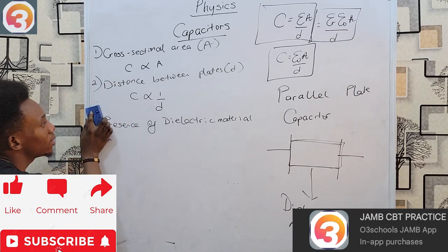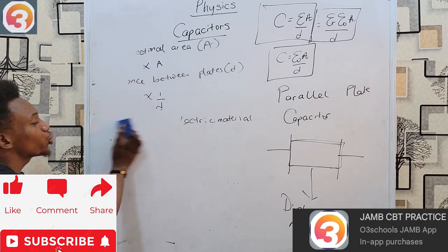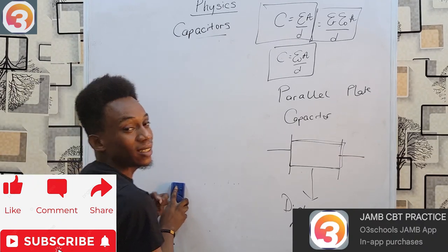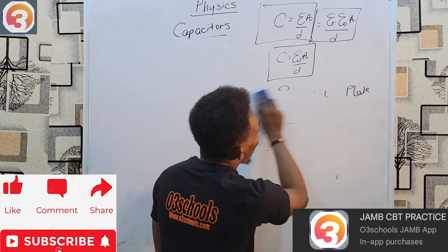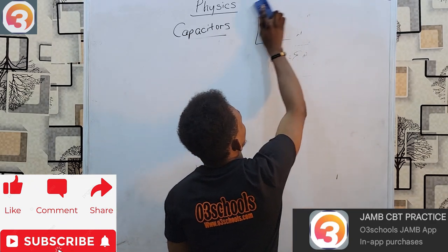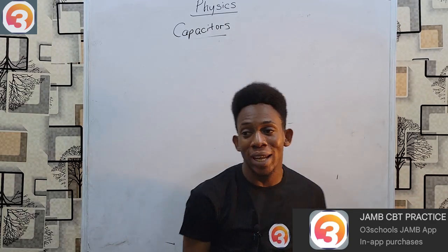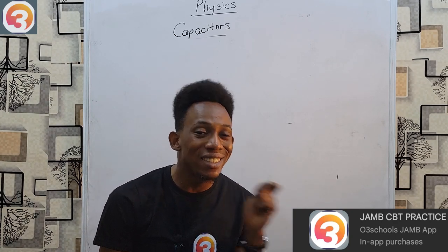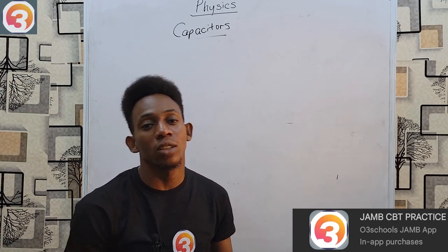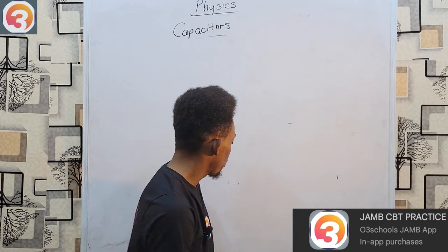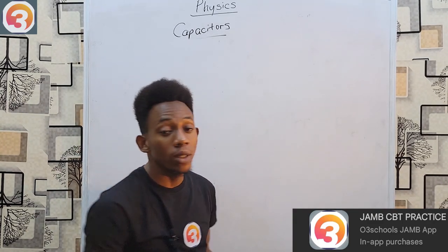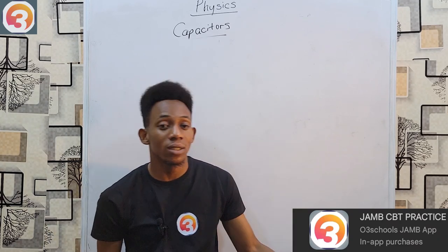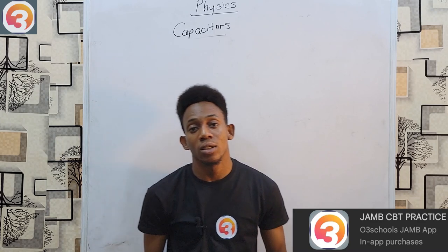Moving on, something intriguing about capacitors is that you can combine several capacitors to give one effective capacitance — many capacitors combined in a circuit to give just one total, net, or resultant capacitance. The way we connect them in a circuit determines what type of capacitance we get.